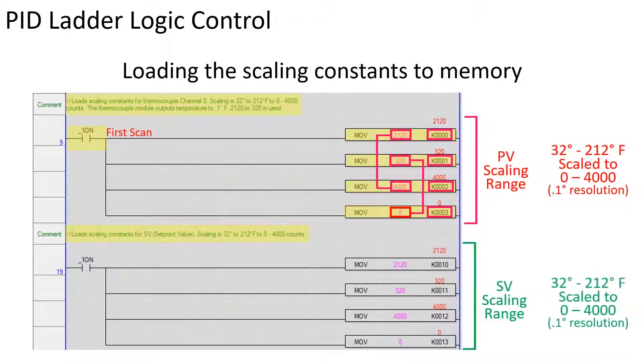The scaling constants for the SV are loaded to memory location K10 through K13 as shown for the PV.